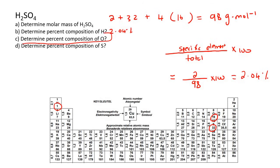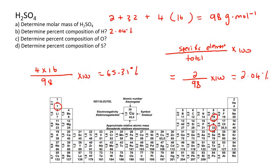Next: determine the percent composition of oxygen. There were four oxygens, so the total mass is 4 times 16, out of the total of 98, multiplied by 100. That gives 65.31%, rounded to two decimal places. For sulfur, there's only one sulfur: 32 over 98 multiplied by 100 gives 32.65%.